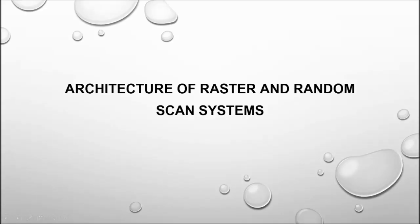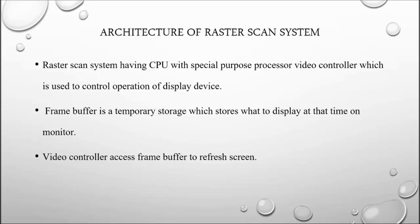In this tutorial we will discuss the architecture of raster and random scan systems. In a raster scan system, the system scans from the upper left corner till the end, repeating the same procedure. In the case of random scan, wherever you want to draw an object like a line or circle, it will start from that place and draw that object only.